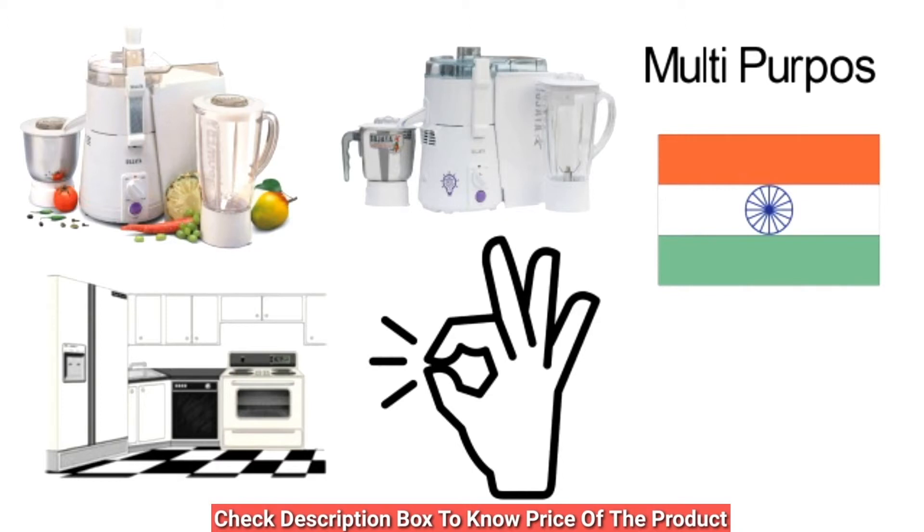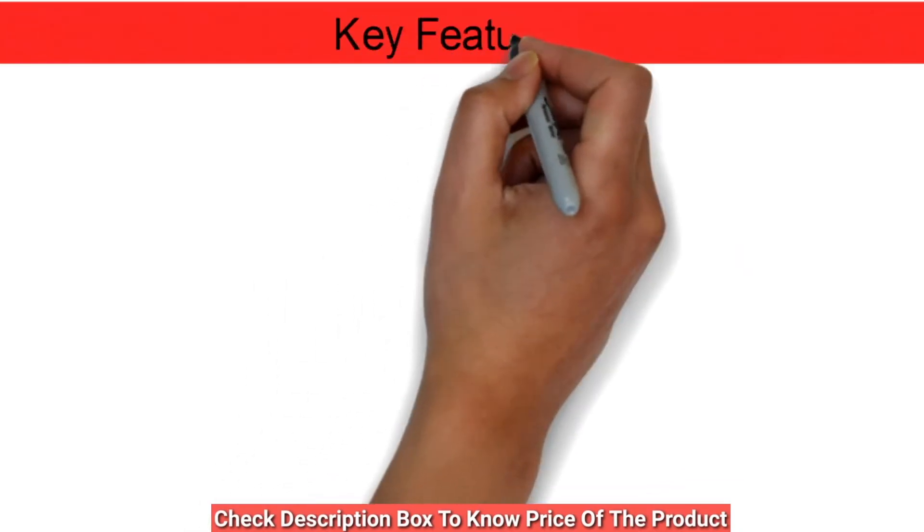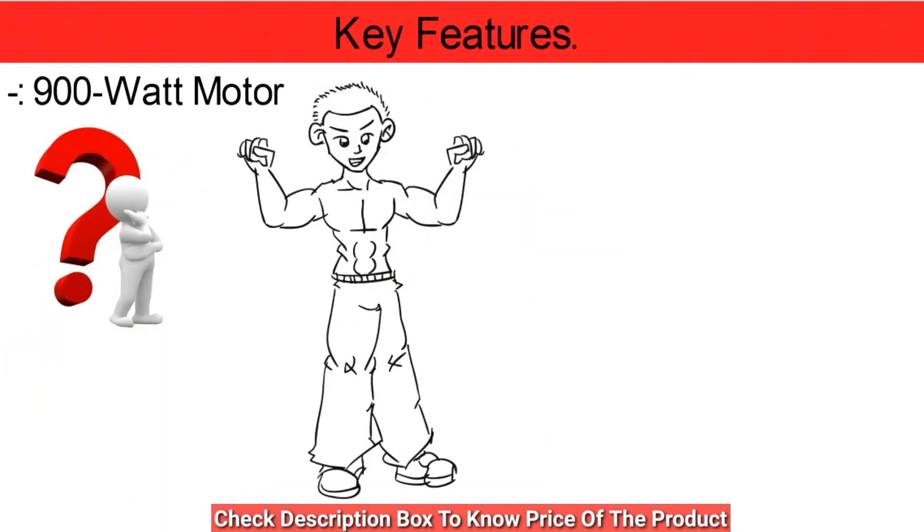Key features: 900 watt motor. What comes to your mind when you hear 900 watts? Powerful. This juicer is powerful enough to sort out all your needs. With this 900 watts, you can do various grinding and blending without hindrance.